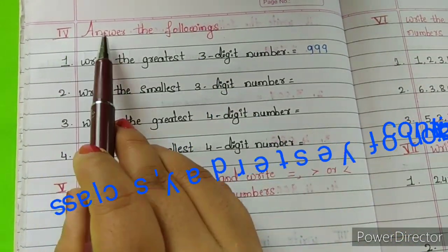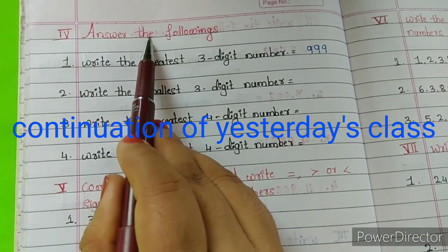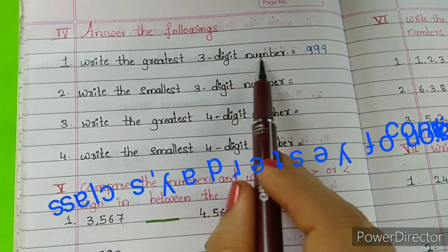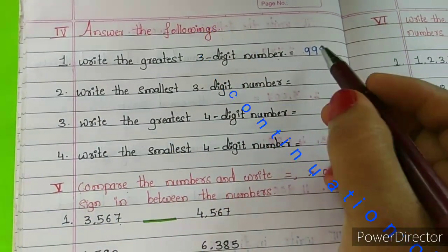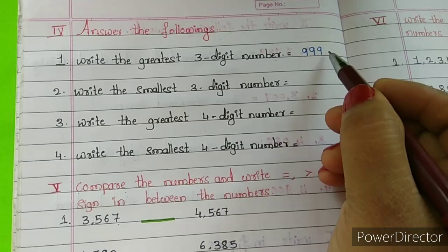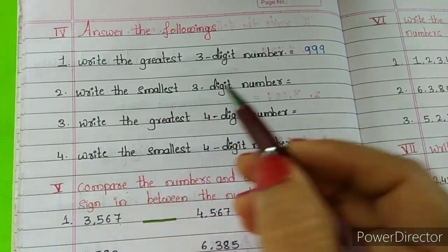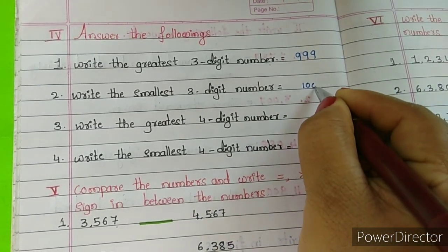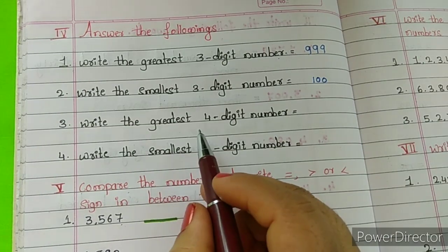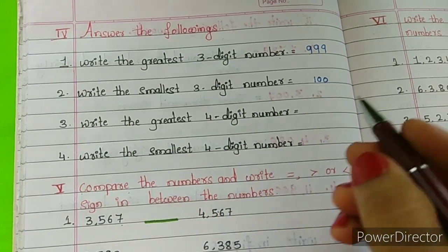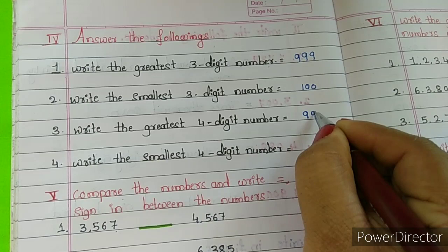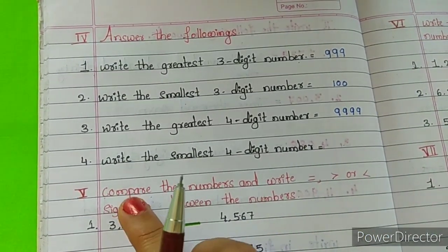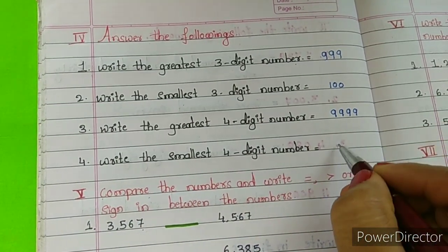Hi children, now we will solve 4th main. Answer the following. First one is, write the greatest 3-digit number. The greatest 3-digit number is 999. Write the smallest 3-digit number. The smallest 3-digit number is 100. Write the greatest 4-digit number. The greatest 4-digit number is 9999. Write the smallest 4-digit number — it is 1000.